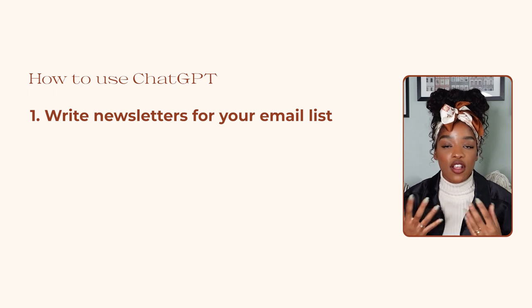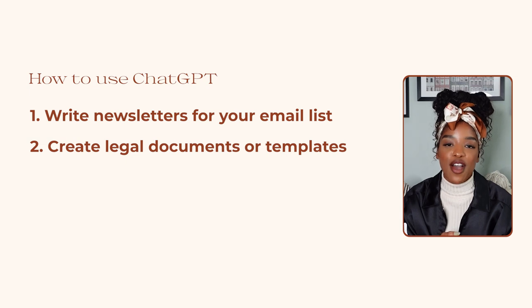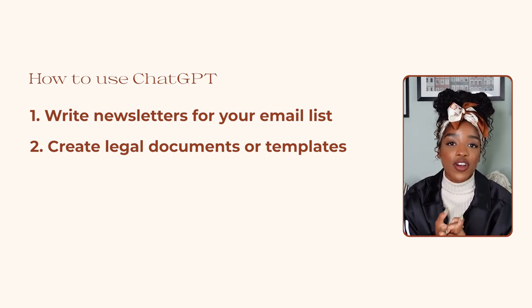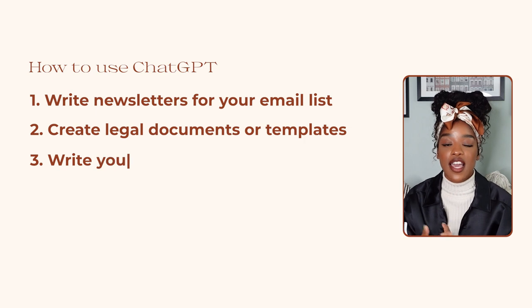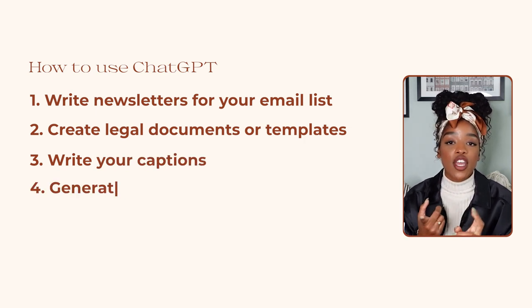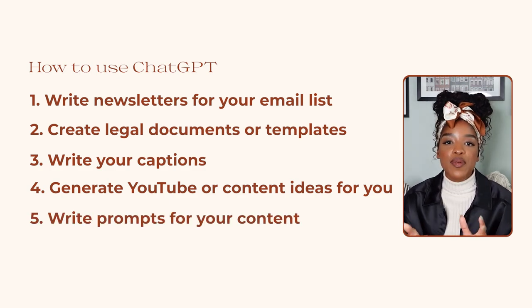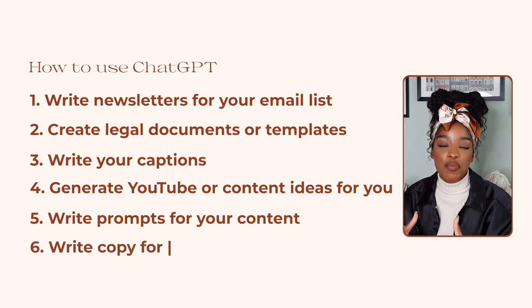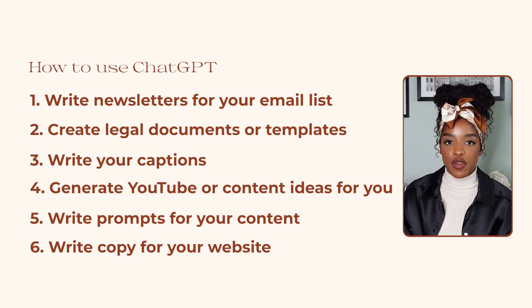There are other ways you can use it to become a better content creator too. You can ask ChatGPT to create legal documents or templates — do this at your discretion and I still recommend having a lawyer look things over, but if you need to quickly generate terms and conditions for a giveaway, ChatGPT can do that for you. You can also get ChatGPT to write your captions, generate YouTube or content ideas, write prompts for your content, and write copy for your website as part of your business or content creator journey. The possibilities really are endless.